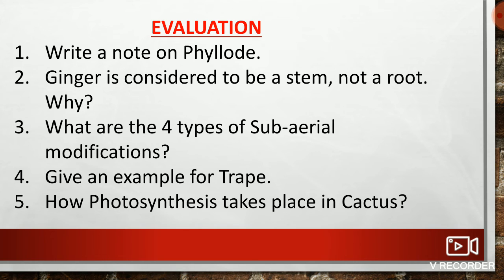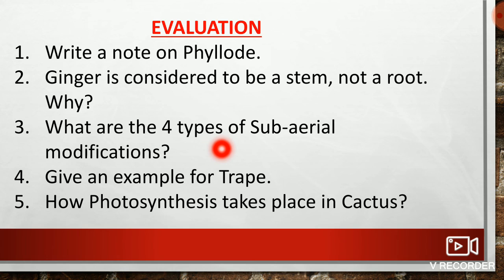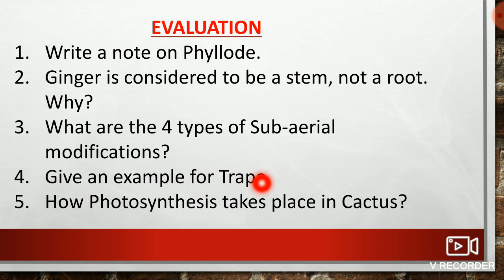It is time to evaluate. Students, I have some questions regarding today's video. Answer all the questions. Question 1: Write a note on phyllode. Question 2: Ginger is considered to be a stem, not a root — why? Question 3: What are the four types of subareal modifications? Question 4: Give an example for trap. Question 5: How does photosynthesis take place in cactus?